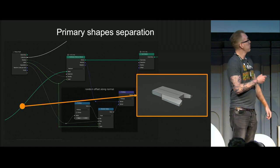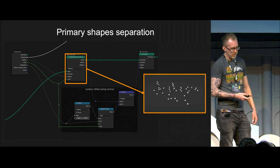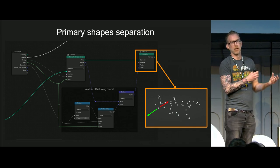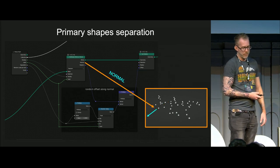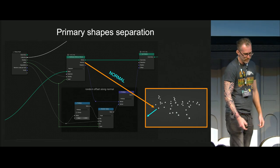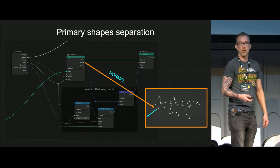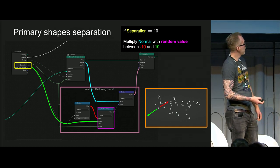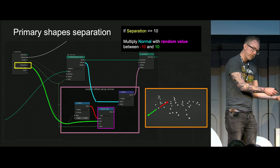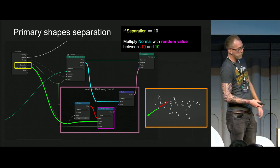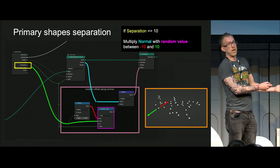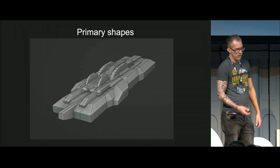First I have the primary shape, then scatter points on that. I want to shift the scatter objects along the surface normal. The normal comes in from the node and distributes points on face — the little blue arrow represents the normal. Then I have the separation value coming in from the user interface, and I multiply that with minus one. So if the input value is 10, I get a minus 10 and 10, put that into a random value. Then I take the normal and multiply it with that random value, and we get this sort of behavior.